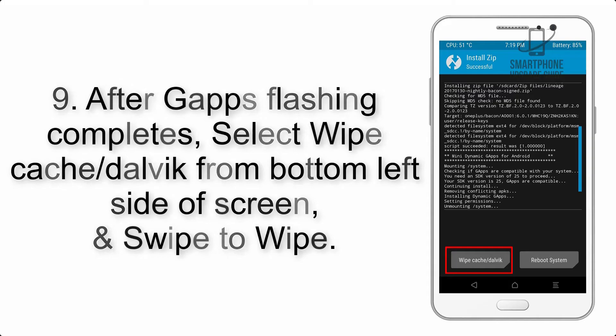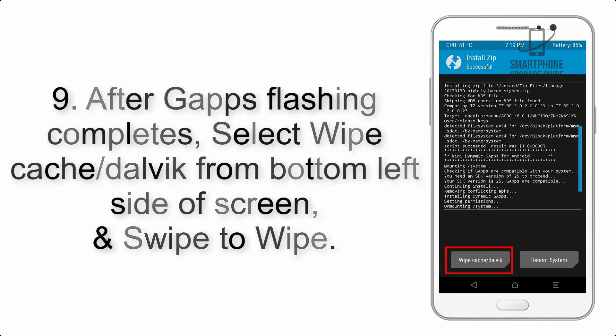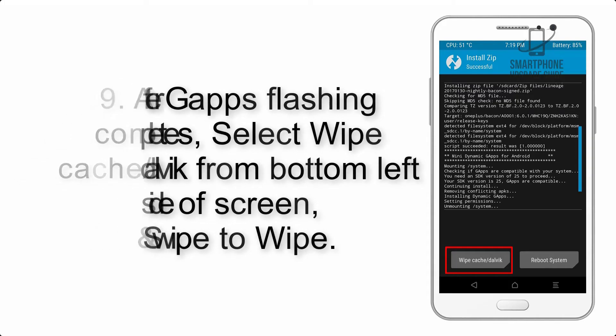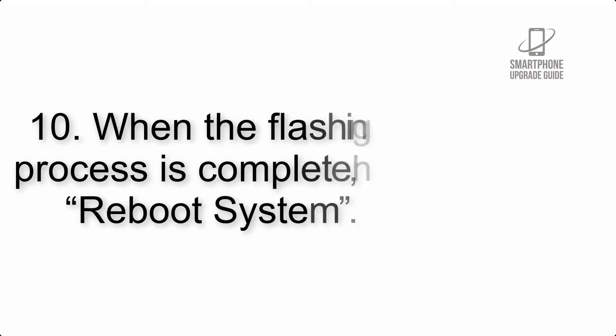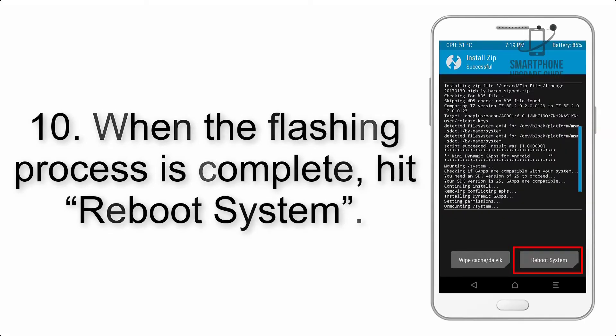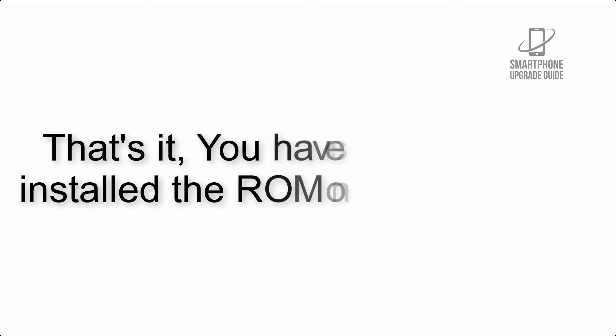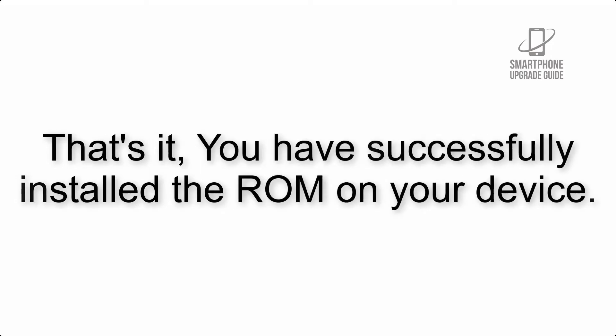Step 9: After gapps flashing completes, select Wipe Cache and Dalvik from the bottom left side of the screen and swipe to wipe. Step 10: When the flashing process is complete, hit Reboot System. That's it — you have successfully installed the ROM on your device.